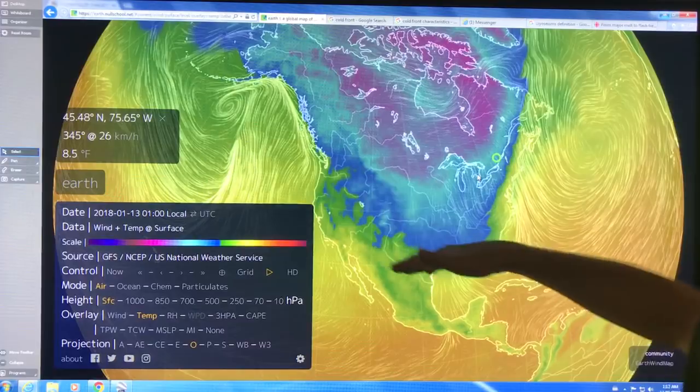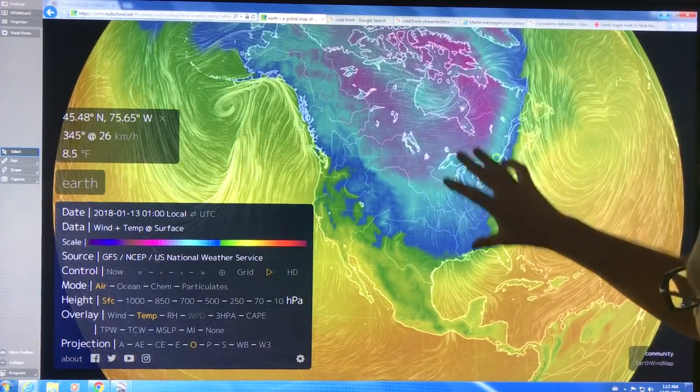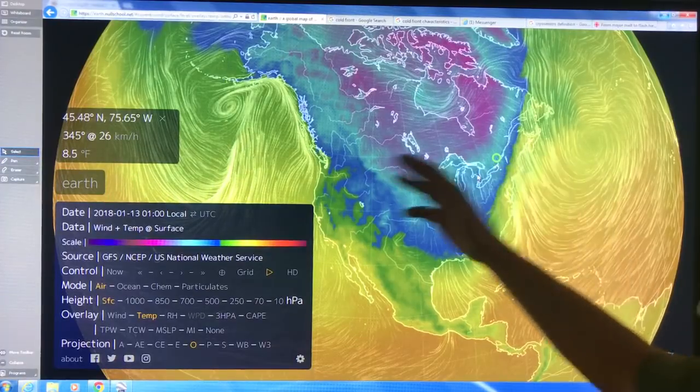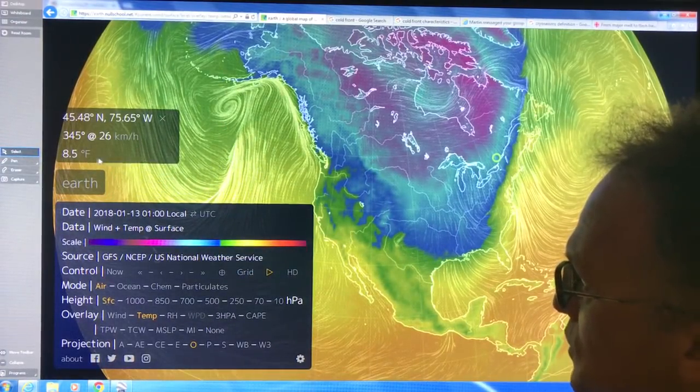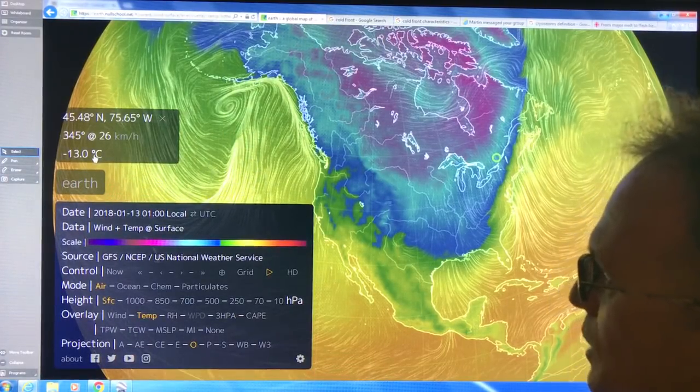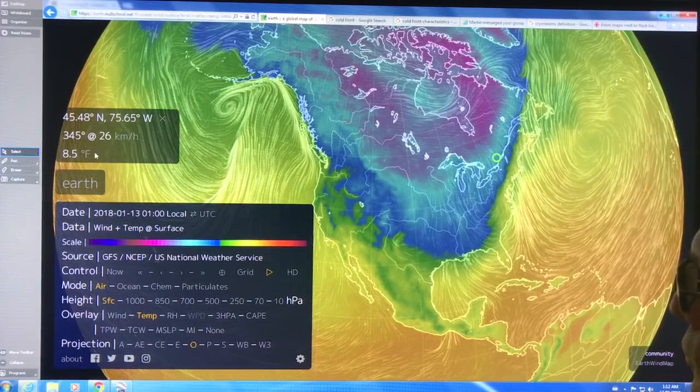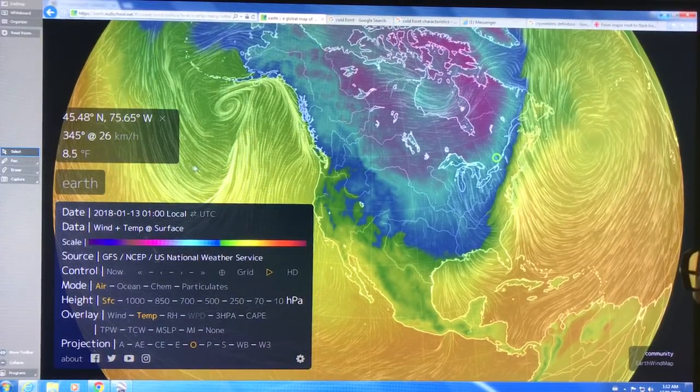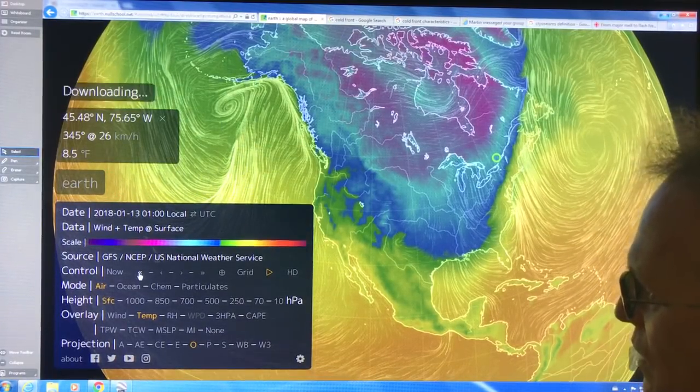This is where Ottawa is on the map, very detailed, very accurate location. This is what we have right now. The jet stream is coming down here and all the cold air is spilling out of the Arctic. You can click on this to change the temperature, change the unit. Minus 13 degrees Celsius right now or 8.5 degrees Fahrenheit.